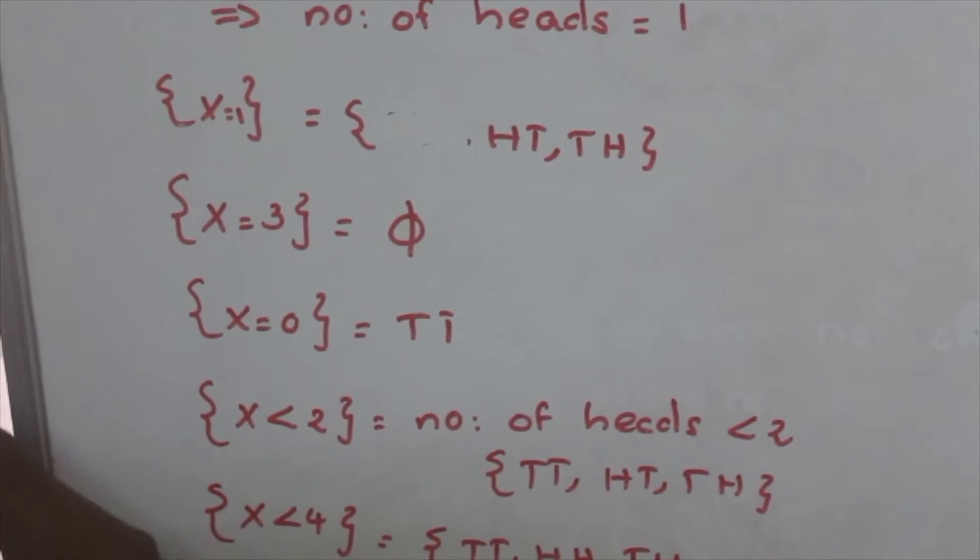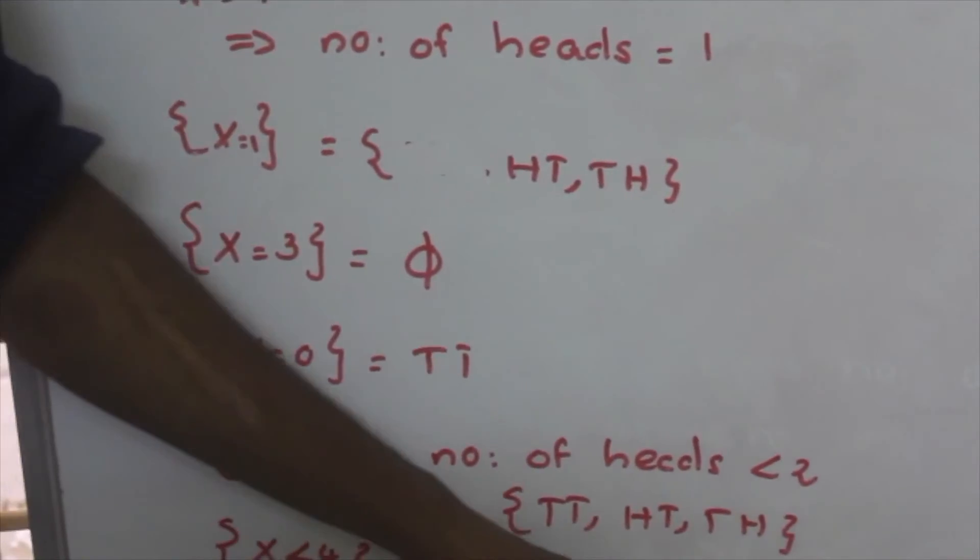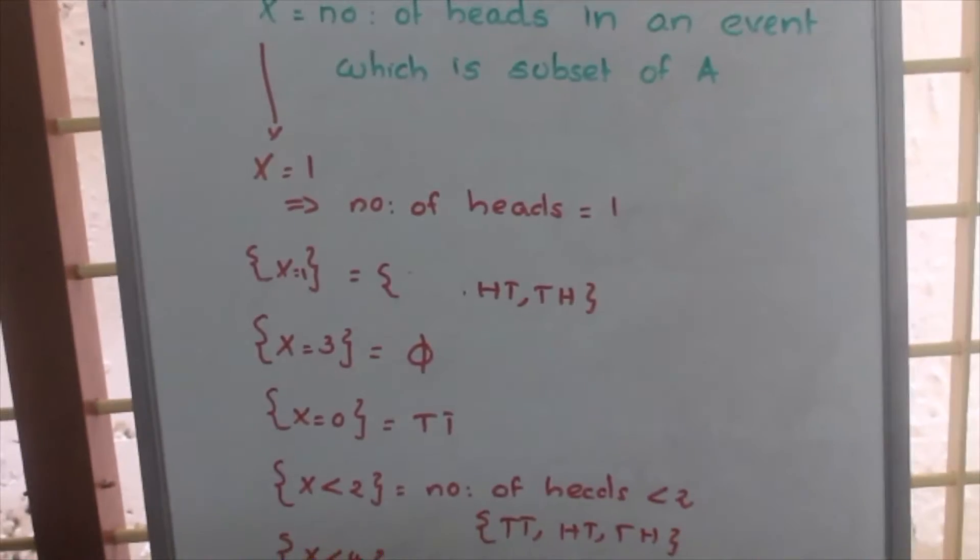If random variable is less than 4, that means the number of heads should be less than 4. All outcomes TT, HH, TH and HT all outcomes are having heads less than 4.